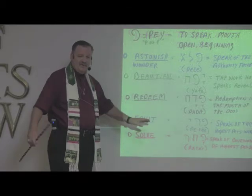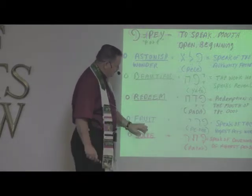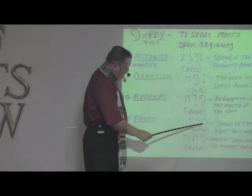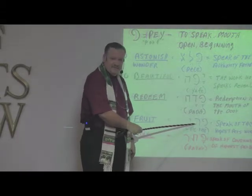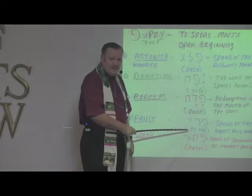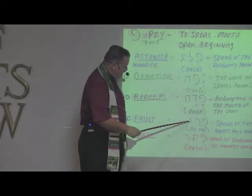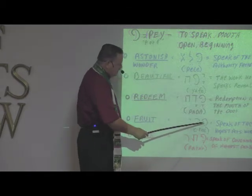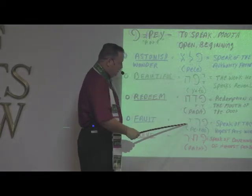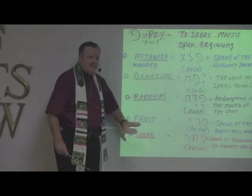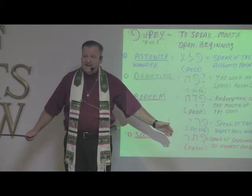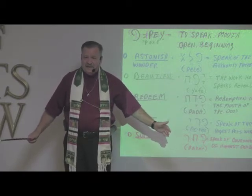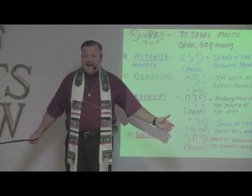We ought to be bearing some fruit. Let's take a look at what makes up fruit here. We've got Peh again. Then we have the Resh, which means the highest person, the head of the house. And we have the tiny Yod sign, which is his work. So this means to speak of the highest person's work. Fruit comes when you speak about the highest work he did — when he died and offered himself as the Lamb of God and spilled his blood on Mount Calvary. That's the highest work of the highest person.